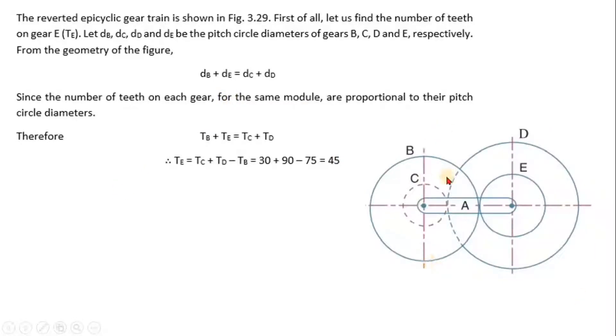Therefore from geometry of this figure, DB that is diameter of B, DB + DE will be equal to DC + DD, right? So DB + DE will be equal to DC + DD. So this is the line passing through the centers of this two gears.